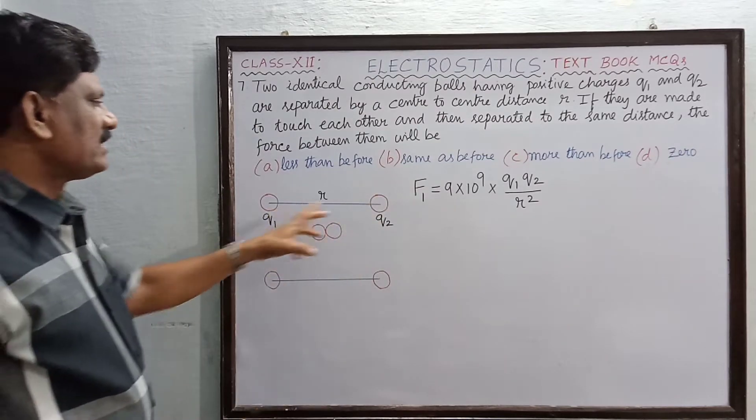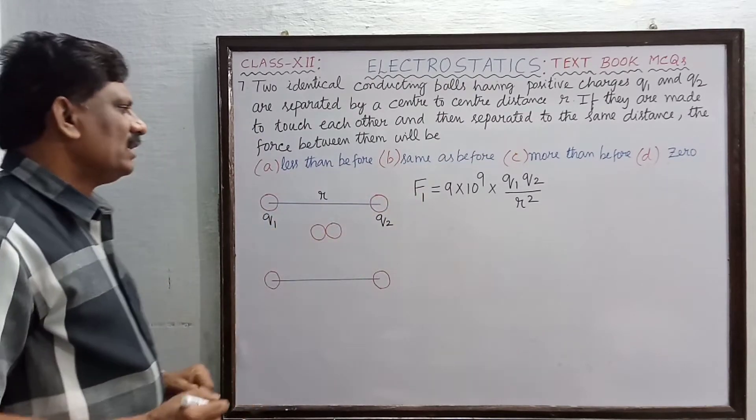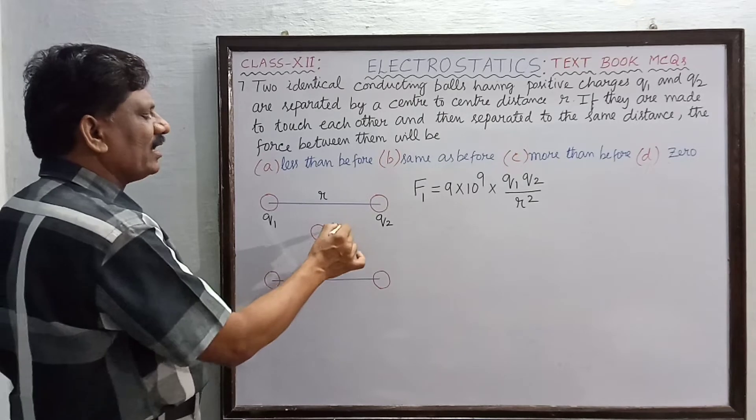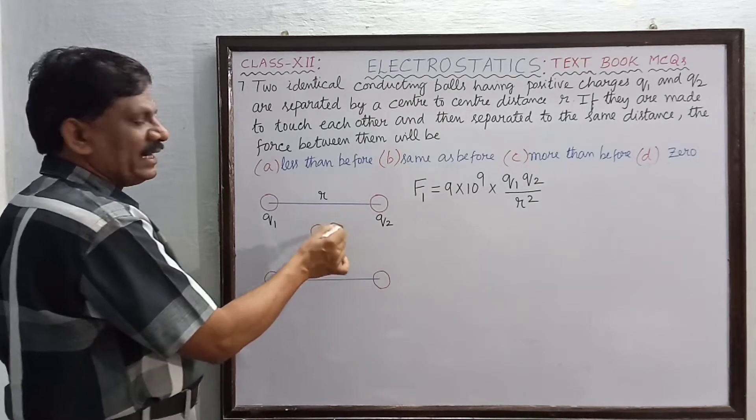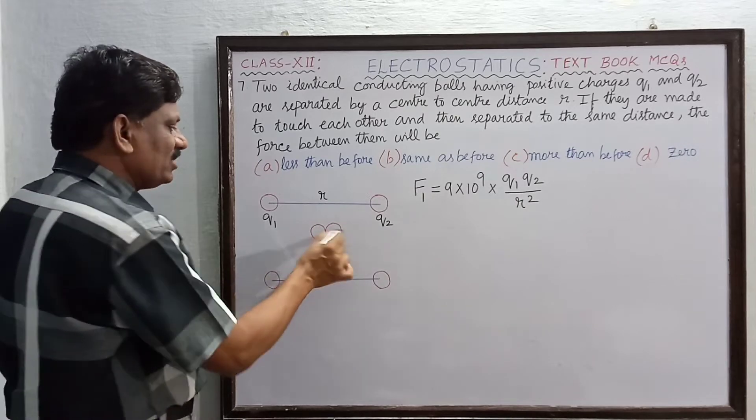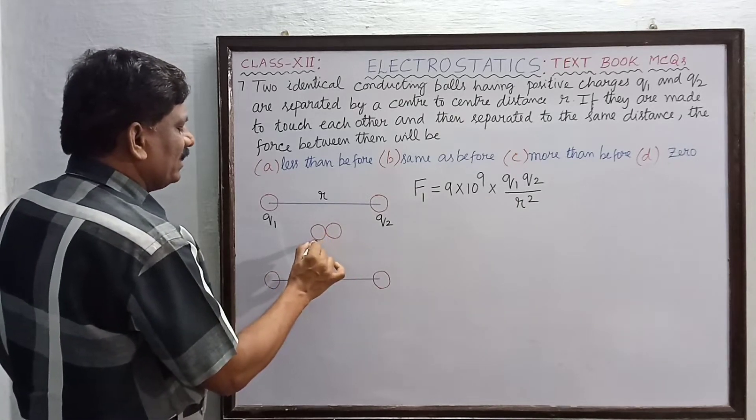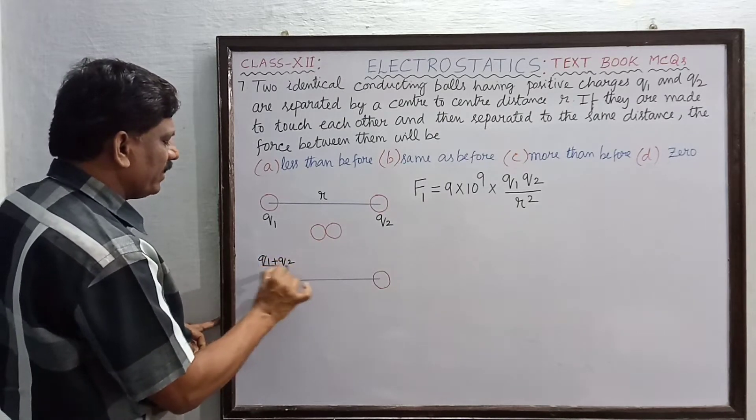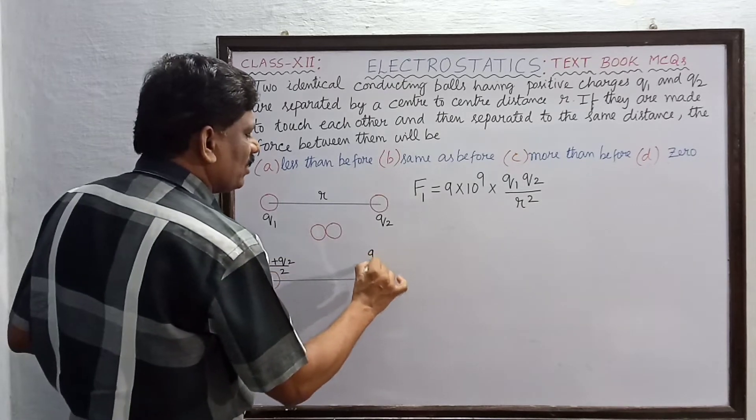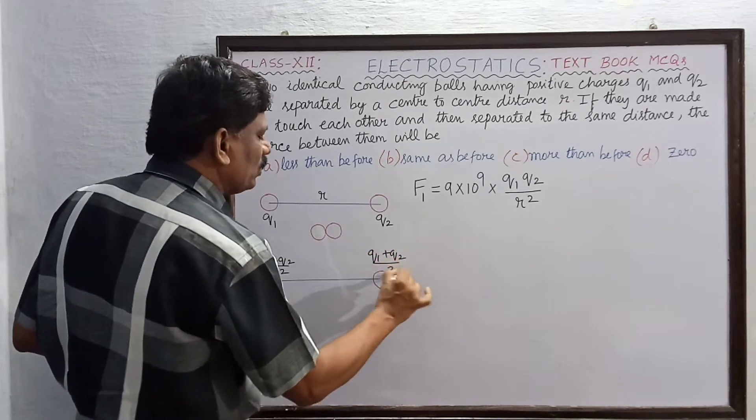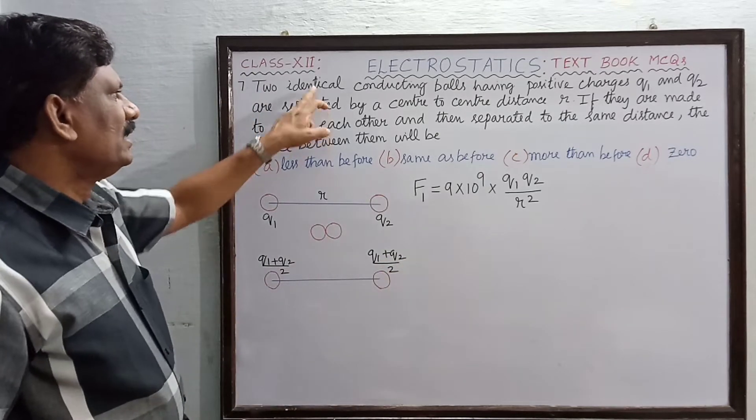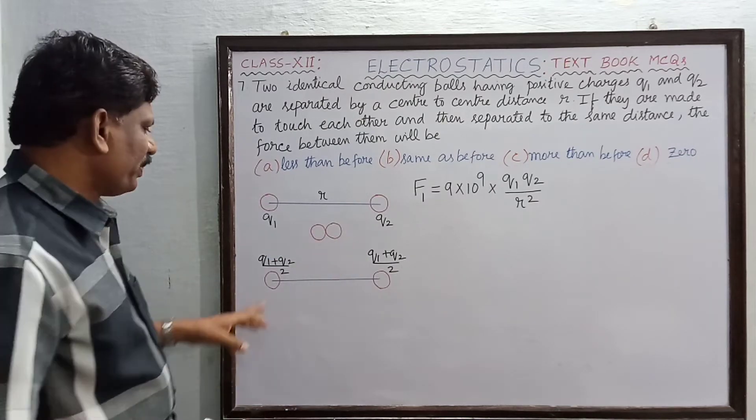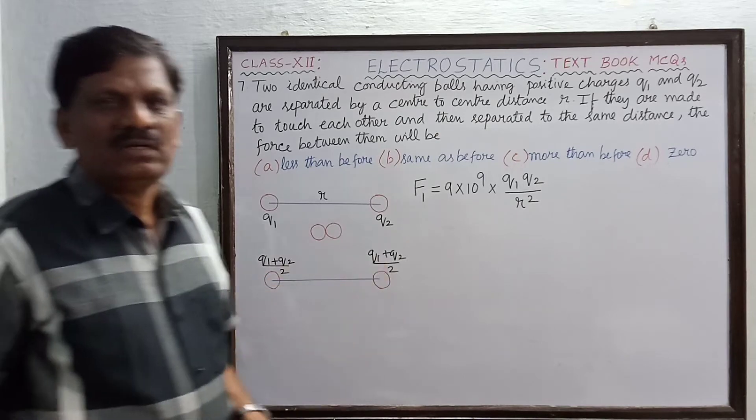Now when these two charged bodies are brought in contact, they are sharing the charges. As a result, what will happen? The charge in the first body will become (q1+q2) divided by 2, and this also will be (q1+q2) divided by 2. They will share the charges equally because they are identical conducting balls.